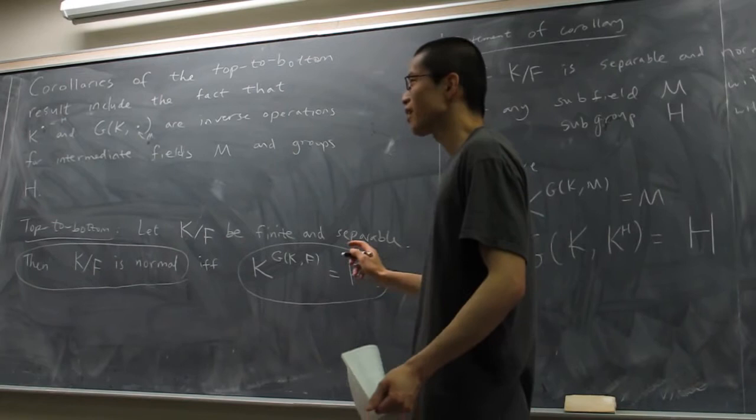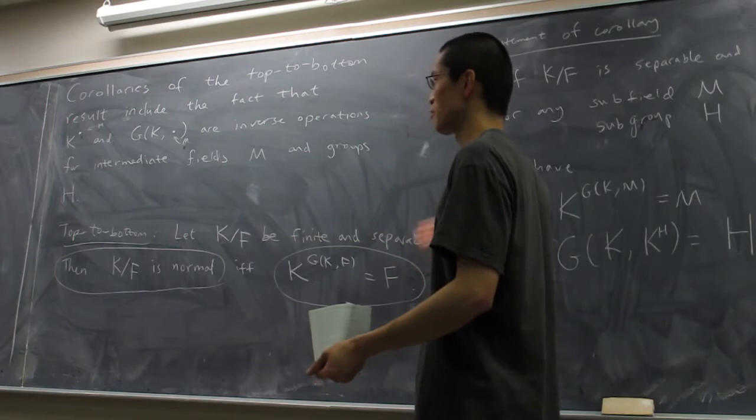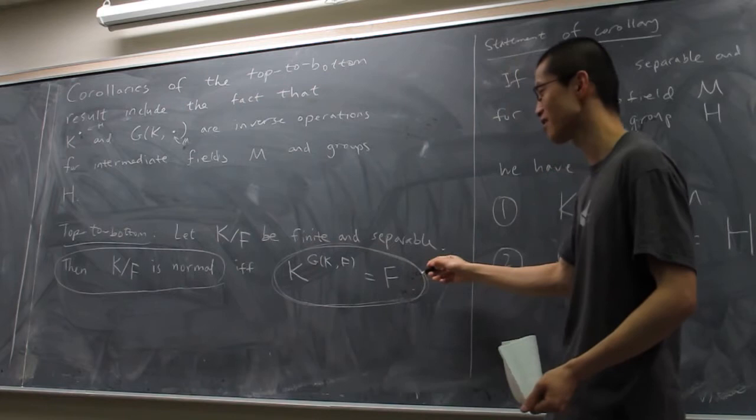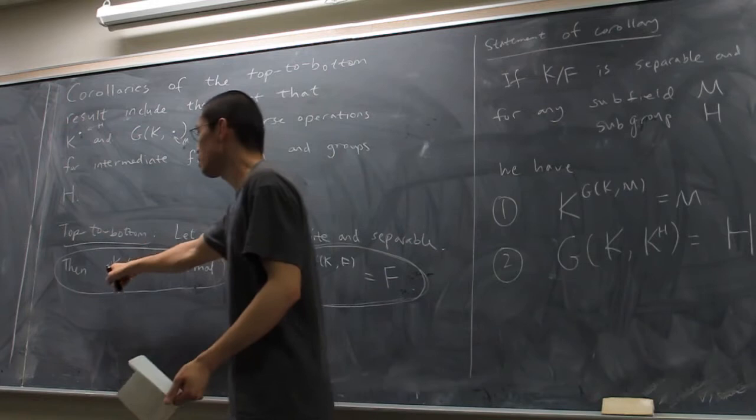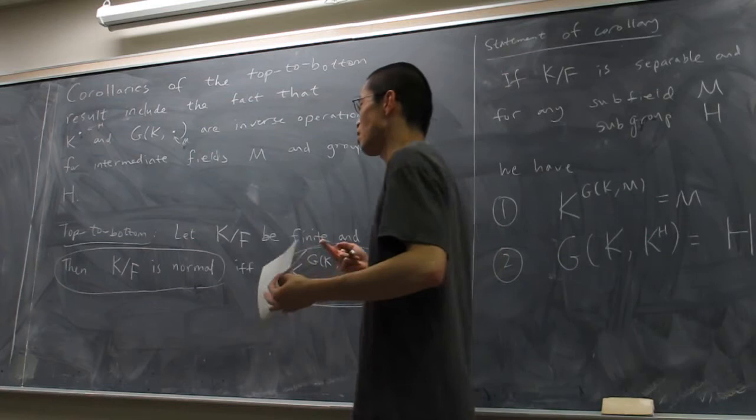The reason why it doesn't feel like this is more fundamental than the corollary is that this statement — the inverse condition — is not intermediate field agnostic. If you change F to some intermediate field, this may not be true. But the splitting field condition is intermediate field agnostic: if you have a polynomial with coefficients from a ground field F that splits in K, it doesn't matter what intermediate field you view the coefficients as coming from.